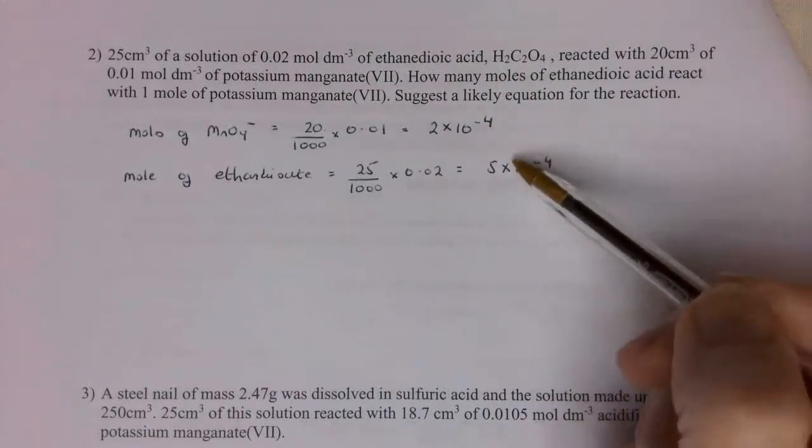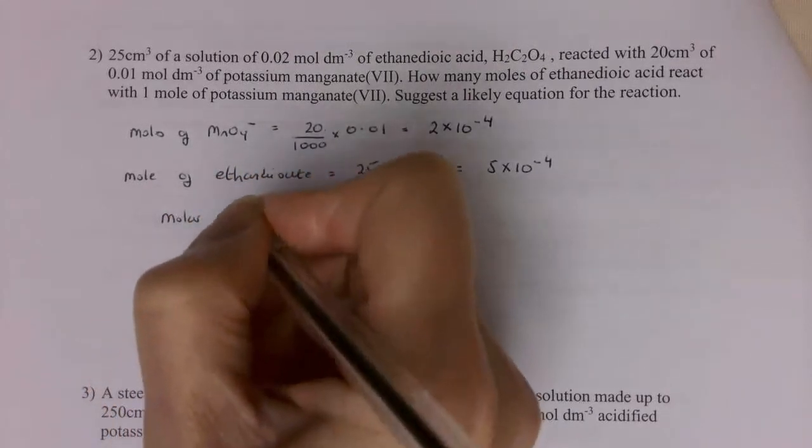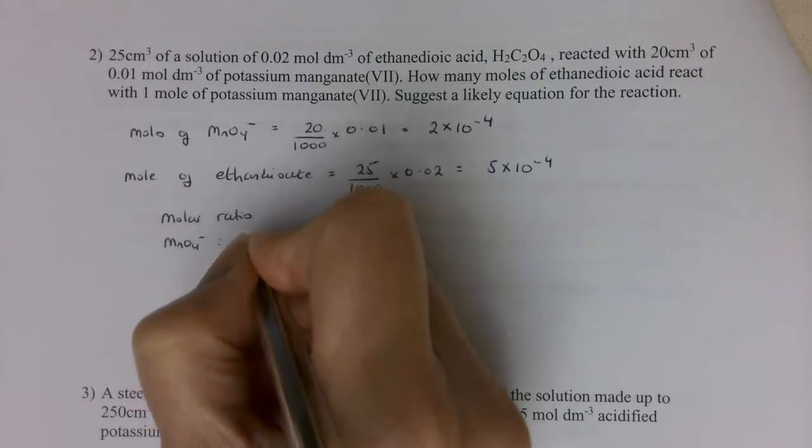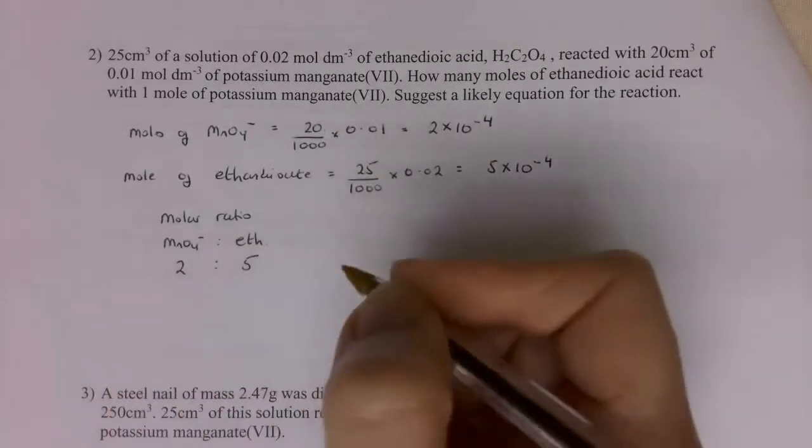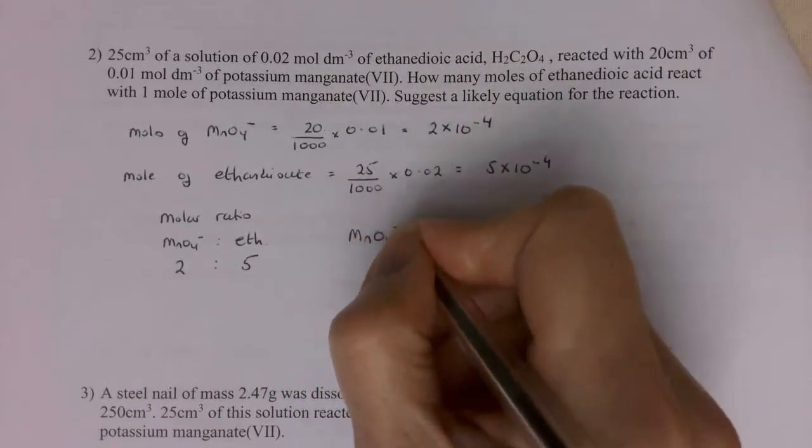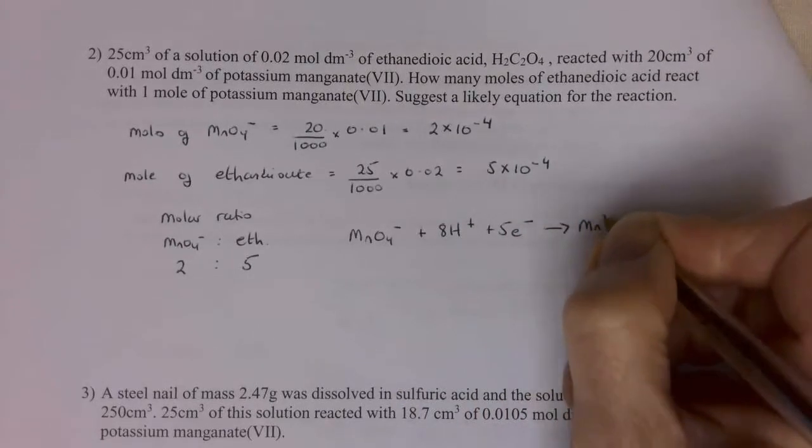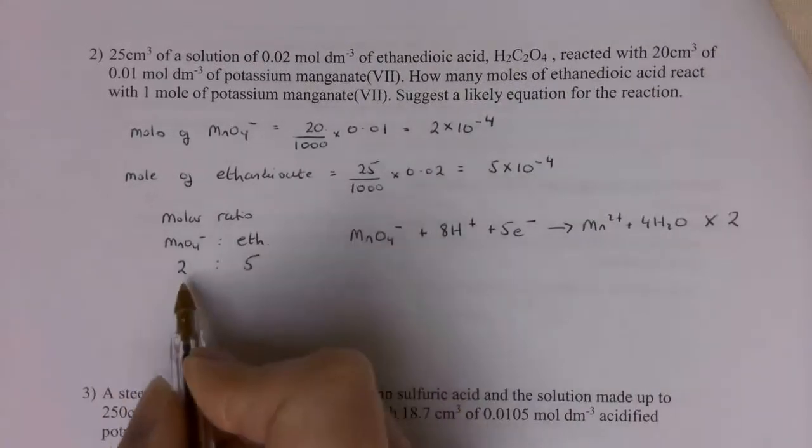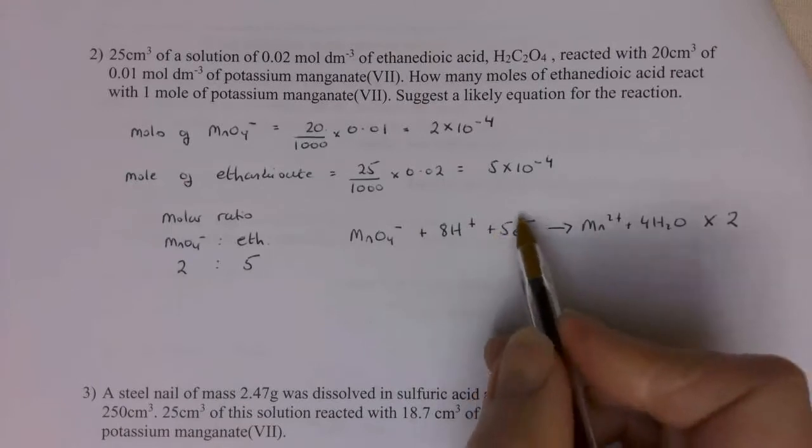I think where this confuses students is it tends to work everything slightly backwards. So we've got the moles here of my two species, which means we can actually work out the molar ratio. So the molar ratio of manganate, MnO4-, to ethanedioate, is a 2 to 5. Now, in terms of equations, we know the manganate equation. So we know we've got MnO4-, plus 8H+, plus 5e-, going to Mn2+, plus 4H2O. And we know that this equation is times by 2, because it's this molar ratio. So we know that actually it's 10 electrons that are being moved across.